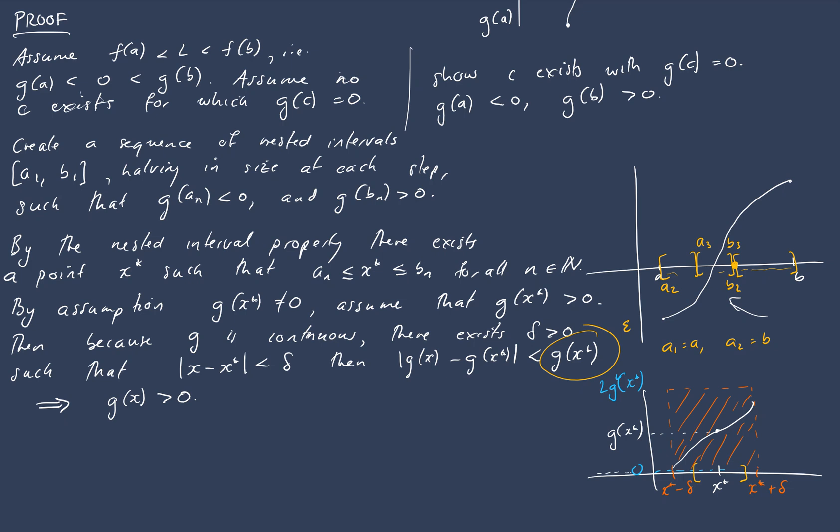So the trick is because our intervals are getting smaller and smaller, eventually we'll get an interval that lies entirely inside our x* minus delta, x* plus delta box. And here's where our contradiction is going to come about because we know that g(x) is positive in this box, but our interval is going to force g of the left-hand endpoint to be negative and that will contradict it. So there also exists an N, n in our natural numbers such that b_n minus a_n, the width of that interval, is less than delta.